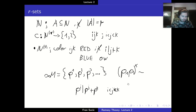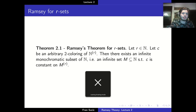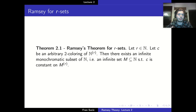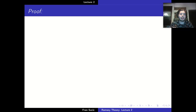Now we are going to prove Ramsey's theorem for R-sets. Let's state it: given R a natural number and C an arbitrary two-coloring of the Rth layer of the natural numbers, then there exists an infinite monochromatic subset of the natural numbers — an infinite set M, a subset of N, such that C is constant on the Rth layer of M. Read this through and make sure all the mathematical language is clear. Now we are going to prove this.